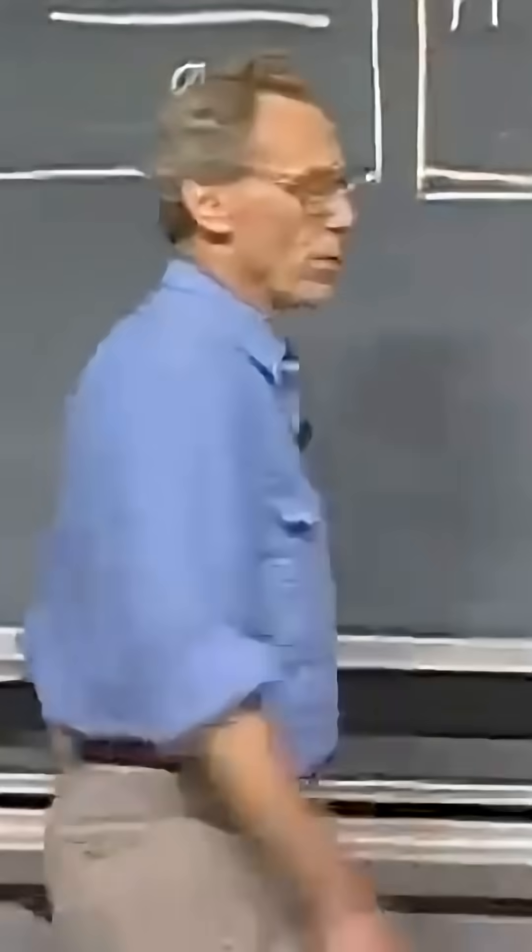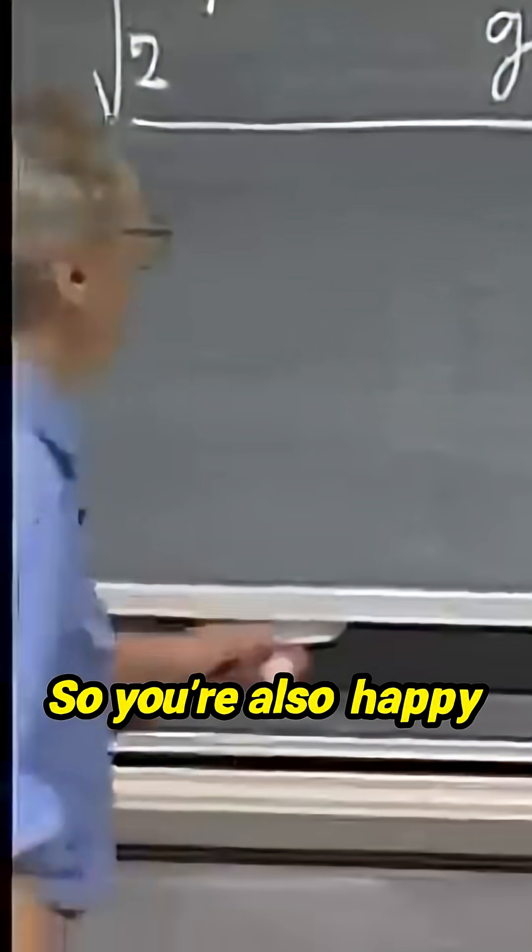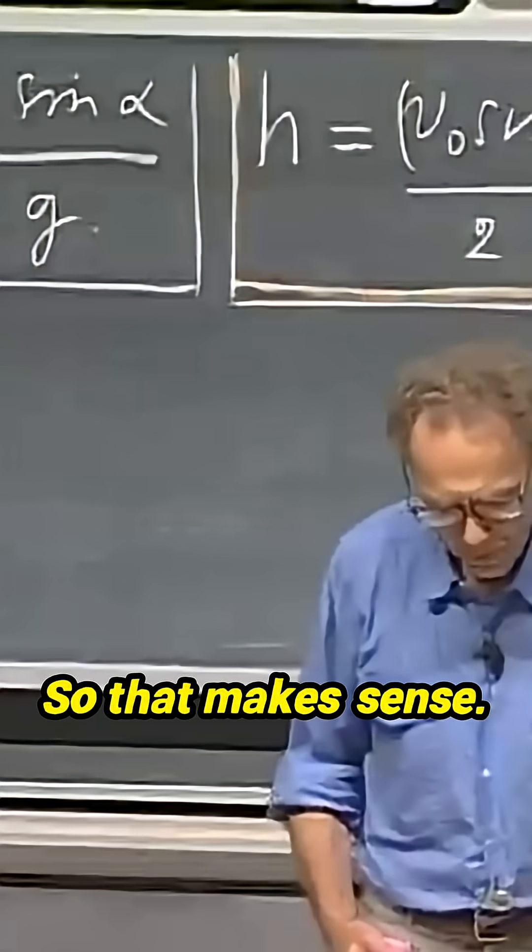If you did the experiment on the moon with the same initial speed, it will go much higher. So you're also happy to see that this g here is downstairs. So that makes sense.